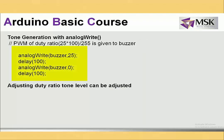With analog write, first set the duty cycle to 25%, then a delay of 100 milliseconds, then write the tone to 0. So the duty cycle alternates: 25%, then 0%, then 25%, then 0%. By setting different duty cycles, you can generate different volumes in the buzzer.